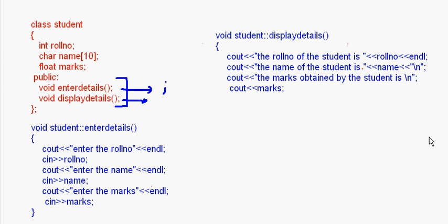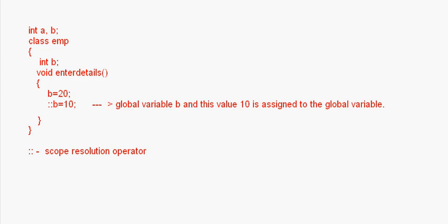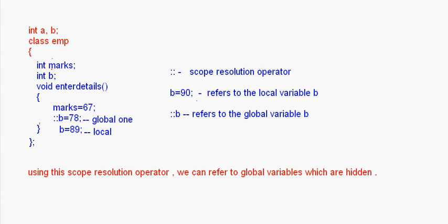This line — void student::enter_details — tells us that the enter_details method is in the student class, because the scope resolution operator is placed between the class name and the method name. Same way, display_details belongs to the student class. We have seen how to use the scope resolution operator for writing functions outside the class and for resolving local and global variable naming conflicts.